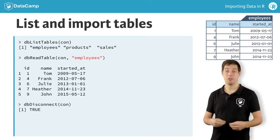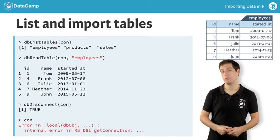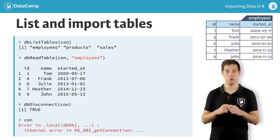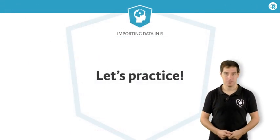If you now try to print the connection object, you'll see that it is no longer available. Good riddance — off to the exercises now.